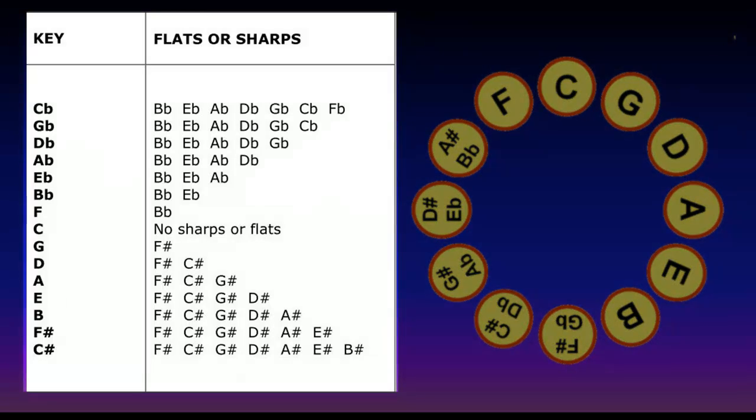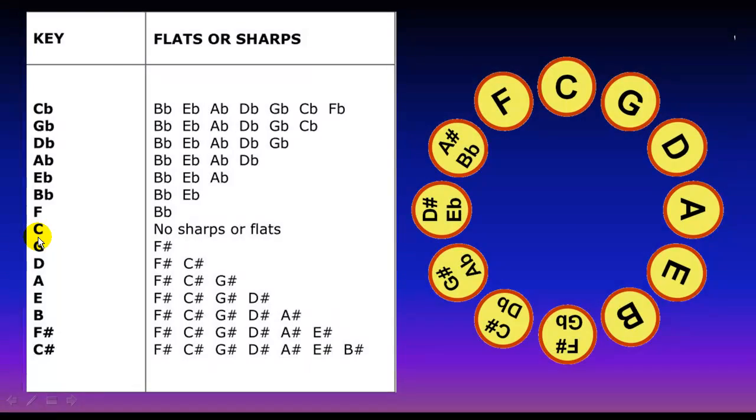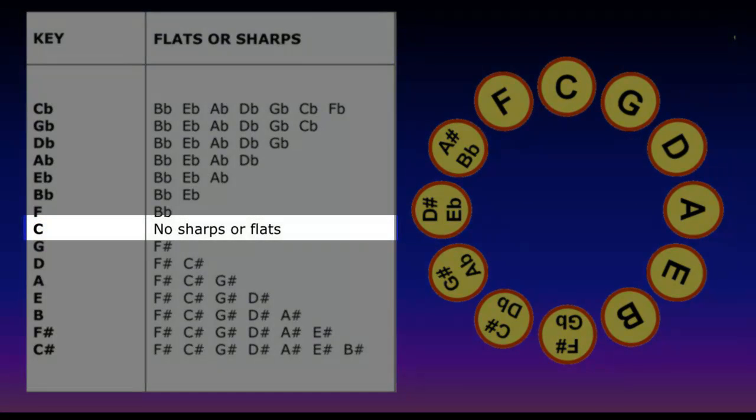Let's take a look at this chart. This chart shows you all the flats and all the sharps. Let's look at the middle. This is C. The key of C has no sharps or flats.